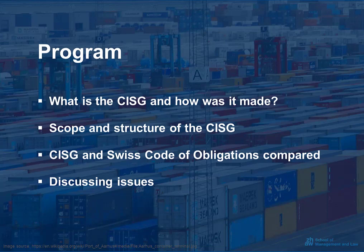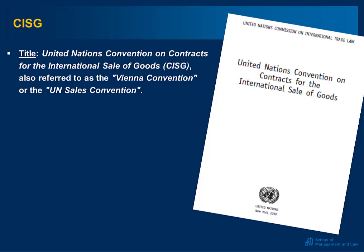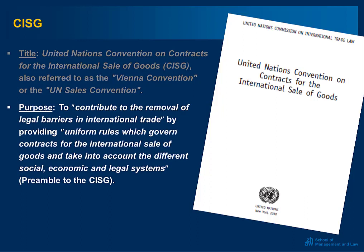What is the CISG and how was it made? The CISG, whose full title is United Nations Convention on Contracts for the International Sale of Goods, is also referred to as the Vienna Convention because it was adopted at a diplomatic conference held in Vienna, and it is also referred to as the UN Sales Convention. The purpose of the CISG, as specified in the preamble, is to contribute to the removal of legal barriers in international trade by providing uniform rules which govern contracts for the international sale of goods and take into account the different social, economic, and legal systems. The CISG has large coverage throughout the world.